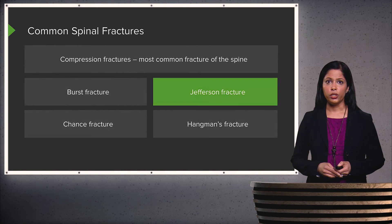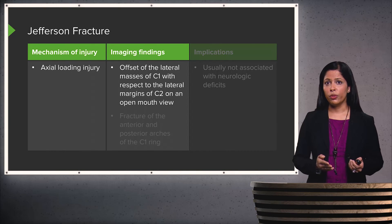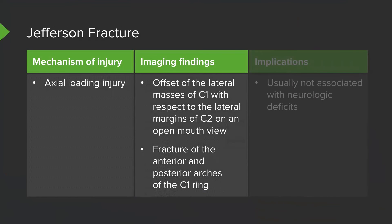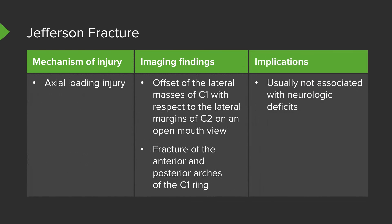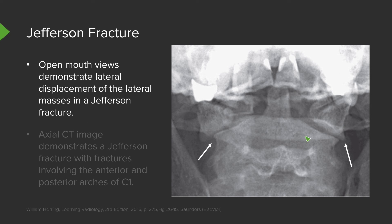Jefferson fractures are axial loading injuries. There is offset of the lateral masses of C1 with respect to the lateral margins of C2 on an open mouth radiograph of the cervical spine. There are also fractures of the anterior and posterior arches of the C1 ring, best seen on CT scan. Usually these are not associated with neurological deficits. This open mouth view demonstrates lateral displacement of the lateral masses, which is prominent when compared with the lateral margins of the C2 vertebral body.